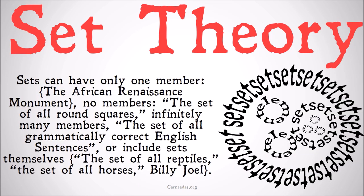Sets can have only one member — for example, the African Renaissance Monument. They could have no members — for example, the set of all round squares. Or infinitely many members — the set of all grammatically correct English sentences. Sets can also include sets of themselves: the members of a set can themselves be sets, and when we're looking at set theory, most often they are.